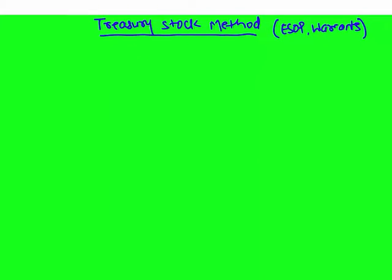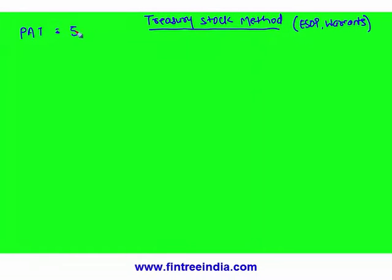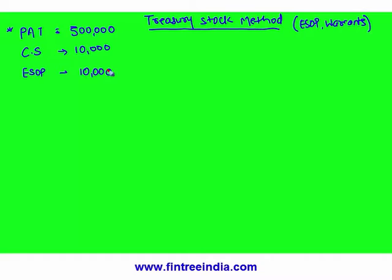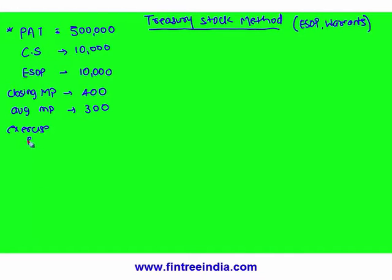Imagine a scenario like this: profit after tax is 500,000. Number of common shares which have been issued is 10,000. Now the company also issued 10,000 ESOPs — employee stock option plans — to its employees, giving them the right to buy shares at a cheaper price. The current closing market price of that stock was 400, average market price during the year was 300, and the exercise price — the price at which the employee can buy shares — is 150.